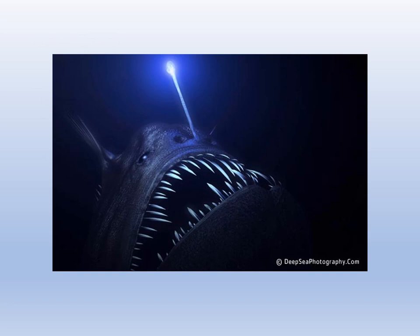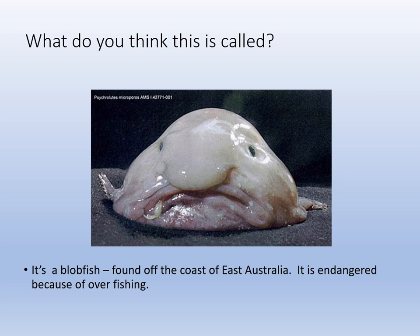An organism with a hydrostatic skeleton — like the blobfish — is rigid at depth because pressure holds it together. Bring it up to the surface and it becomes a blob. They can only live under pressure.